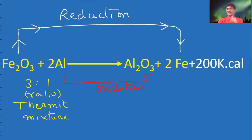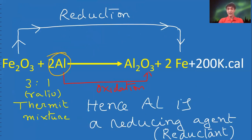Now, iron oxide changes into iron. That gets reduced. Aluminum changes into Al2O3. That is called oxidation. What is the role of aluminum here?